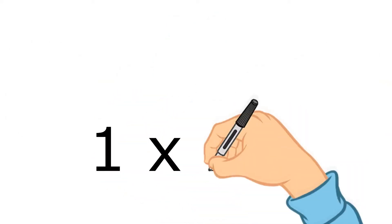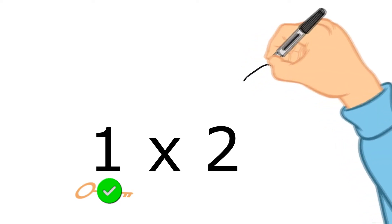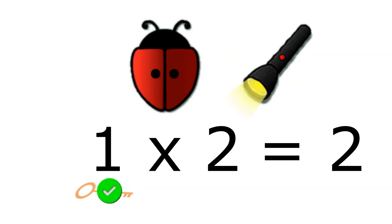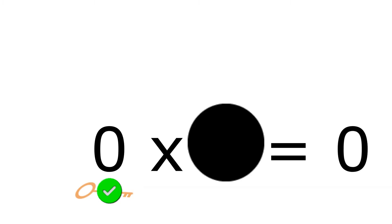If you saw one times two as a multiplication question, you just told me one dot on each wing two times over gives you two dots. But would we normally use the ladybug to do one times two? No — you'd use the torch. You shine the torch on the number two and the answer is two. It's quicker than imagining a ladybug with one dot on each wing. The same goes for zero times two — imagining a ladybug with zero dots on each wing gives zero, but it's quicker to use the zero key: the black hole. Everything disappears into the black hole — ladybug and all.